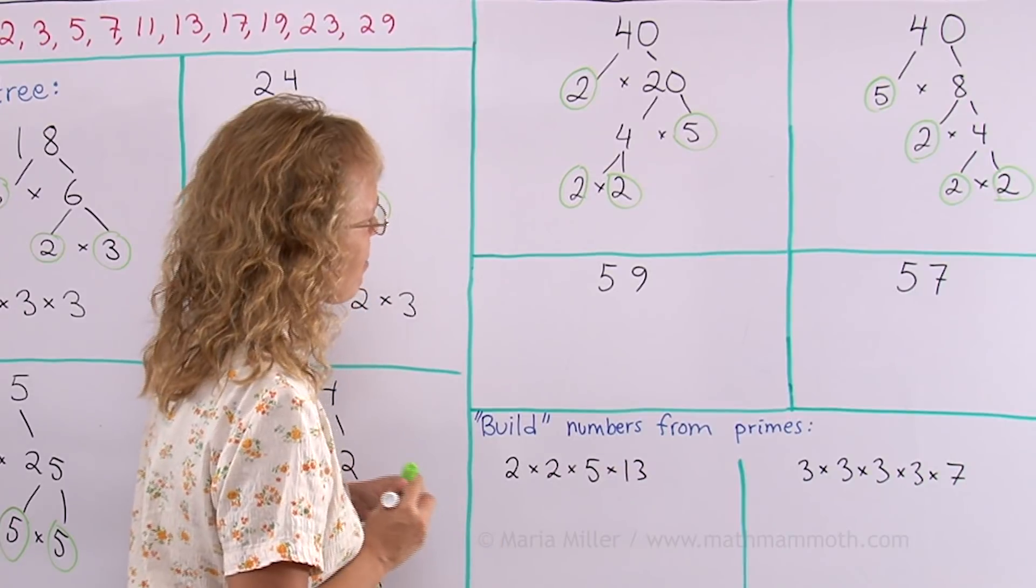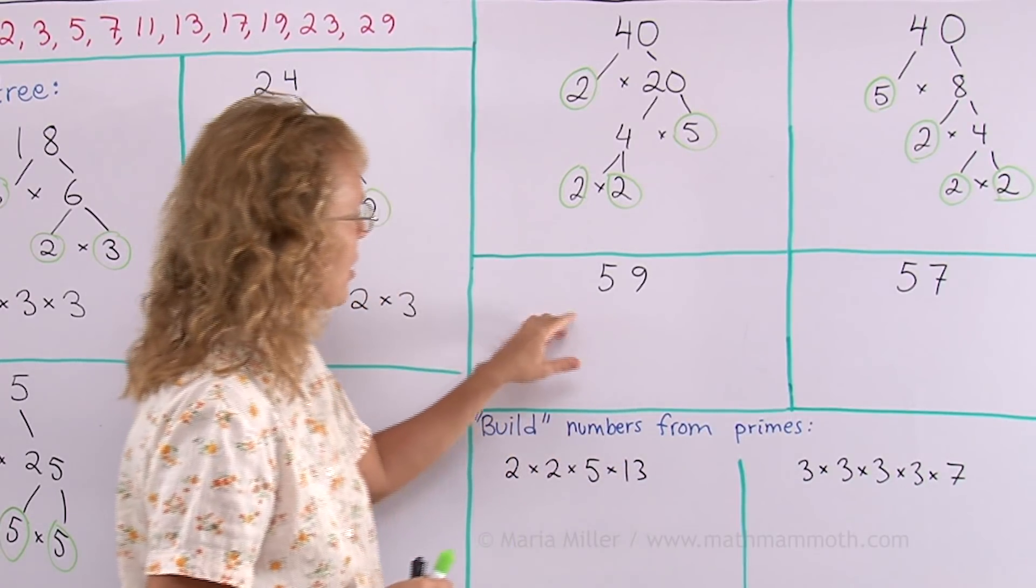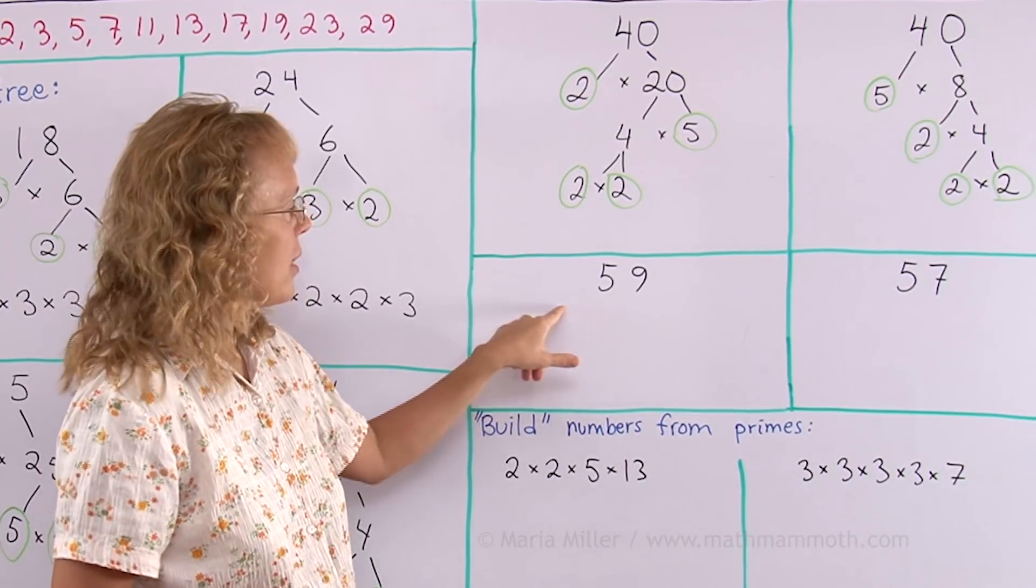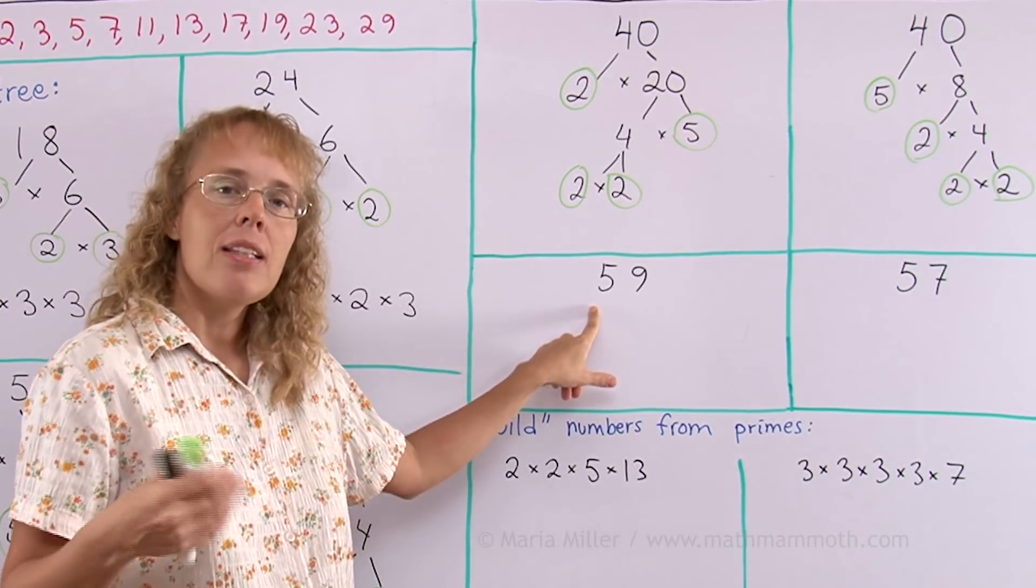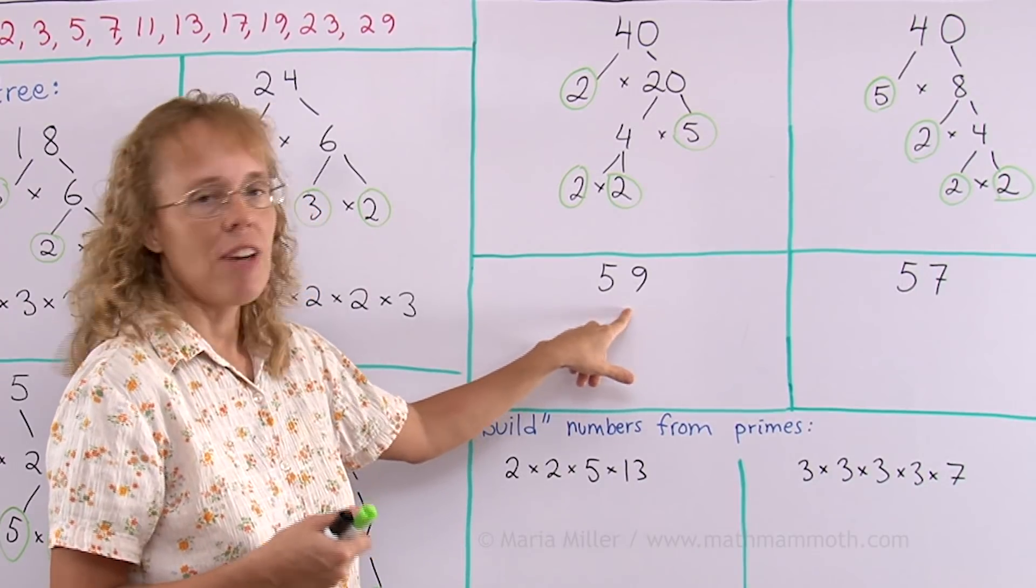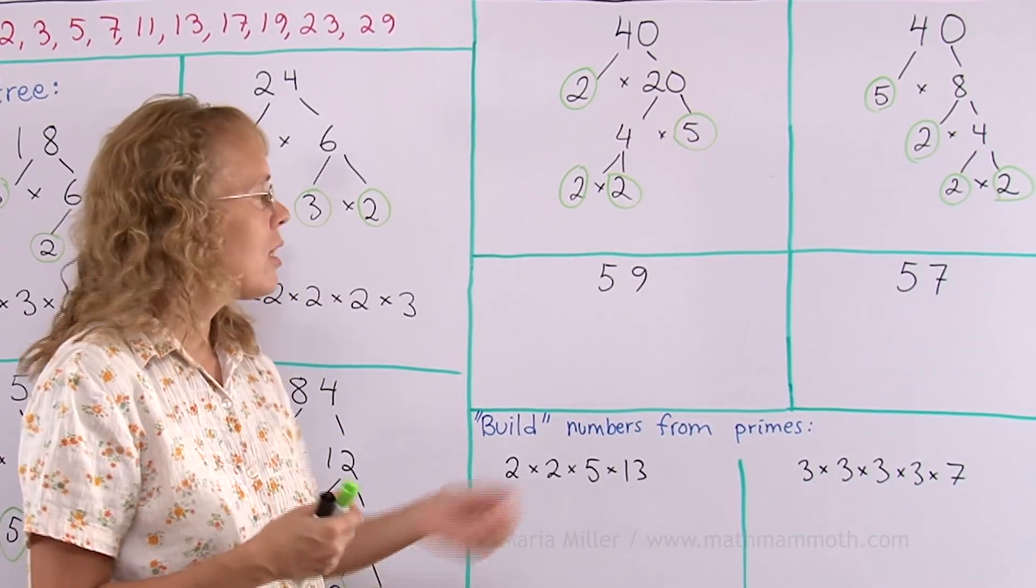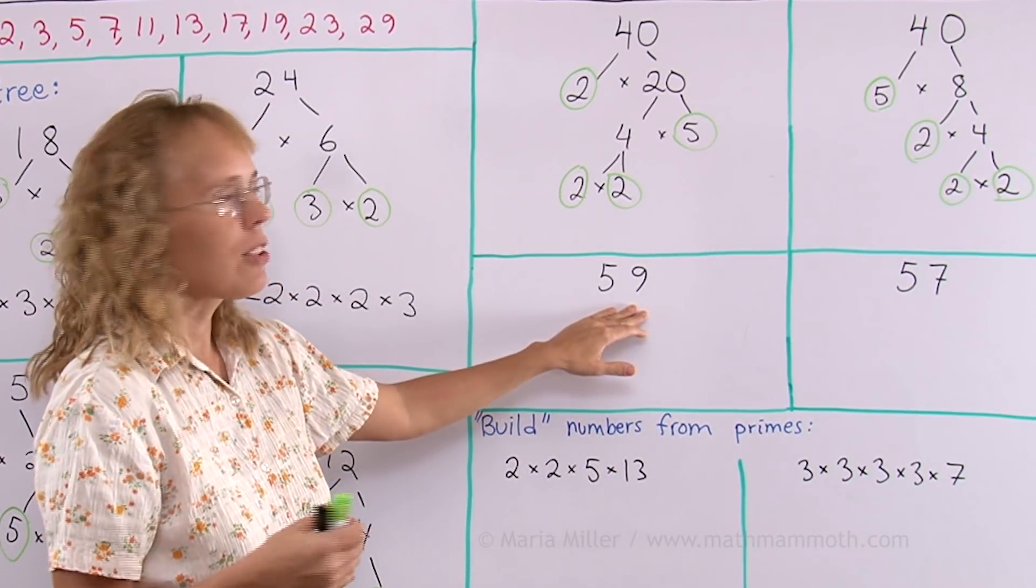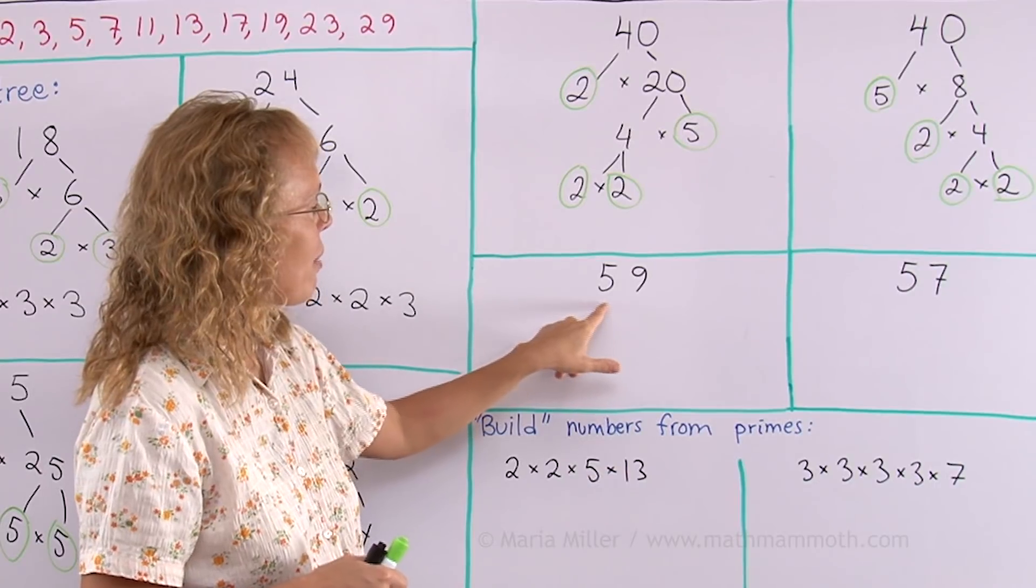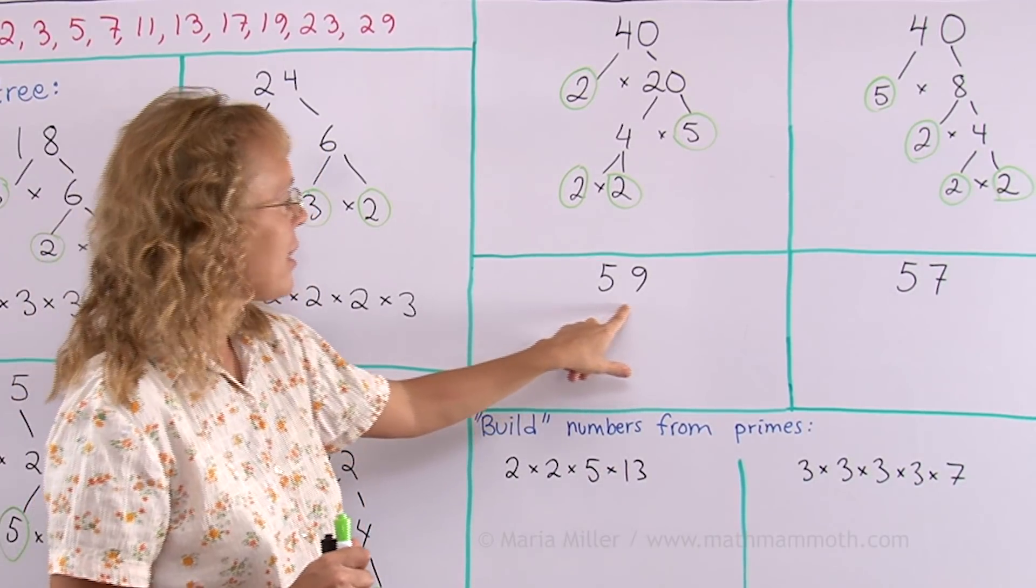59. Well, nothing comes to my mind. Is this divisible by 2? No. Is it divisible by 3? That's a divisibility test for 3. I add the digits: 5 plus 9 is 14. 14 is not divisible by 3, so neither is this one. Not divisible by 4 or 6 or any even number, of course. How about by 5? No, it doesn't end in 5 or 0.